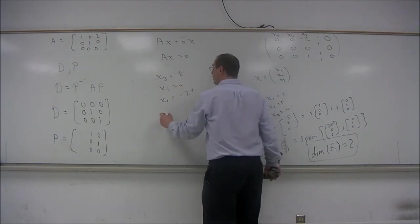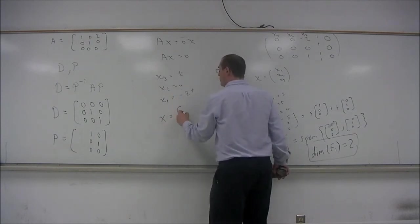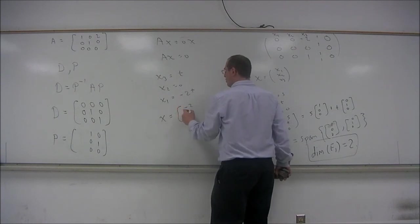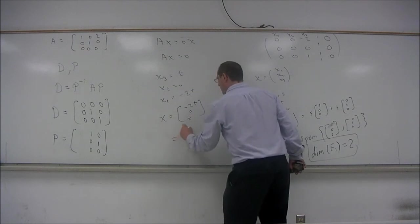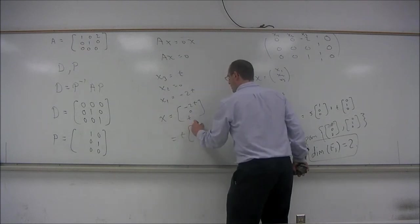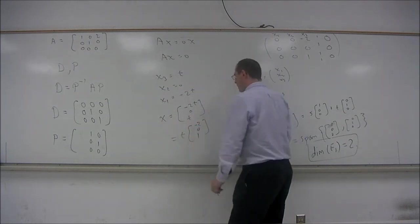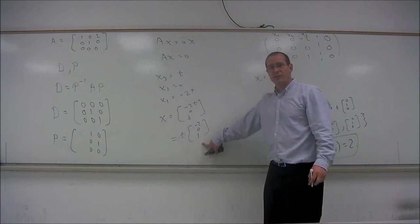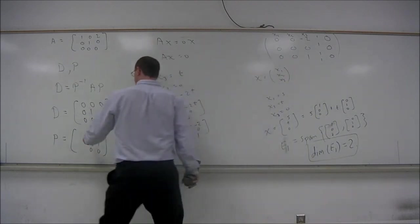And x1 is going to equal negative 2x3. So that's negative 2t. So the solutions are x equals negative 2t, 0, t. So that's t times the vector negative 2, 0, 1. So there is a basis vector for the eigenspace E0.